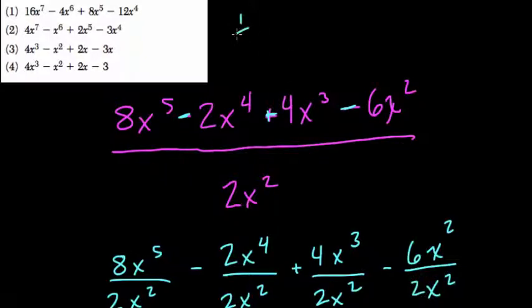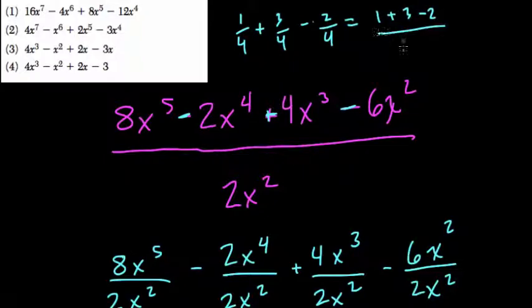So here, if you had, let's say, 1 fourth plus 3 fourths minus 2 fourths, you could solve this by saying, okay, 1 plus 3 minus 2, all of that over 4, which is, of course, 4 minus 2, which is 2 fourths or 1 half,